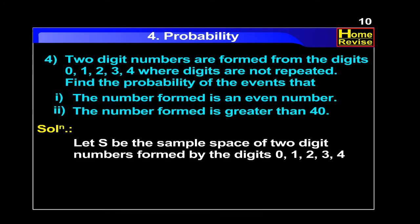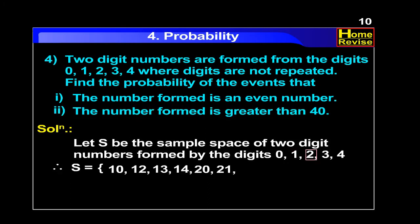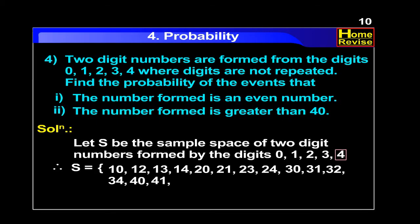Solution. Let S be the sample space of 2-digit numbers formed by the digits 0, 1, 2, 3 and 4. Therefore, S is equal to, in curly brackets: 10, 12, 13, 14, 20, 21, 23, 24, 30, 31, 32, 34, 40, 41, 42 and 43. Therefore, n of S is equal to 16.